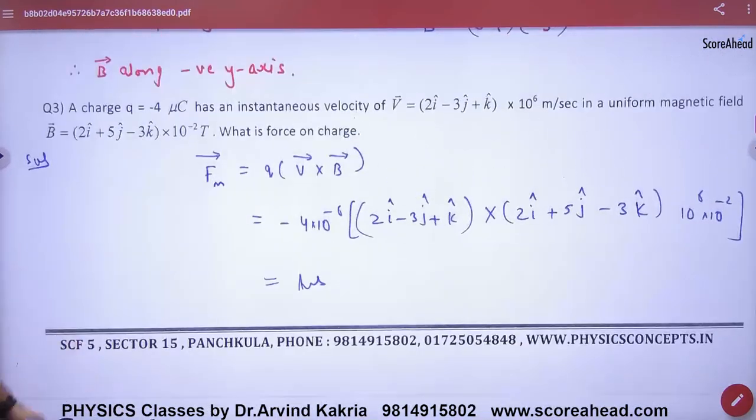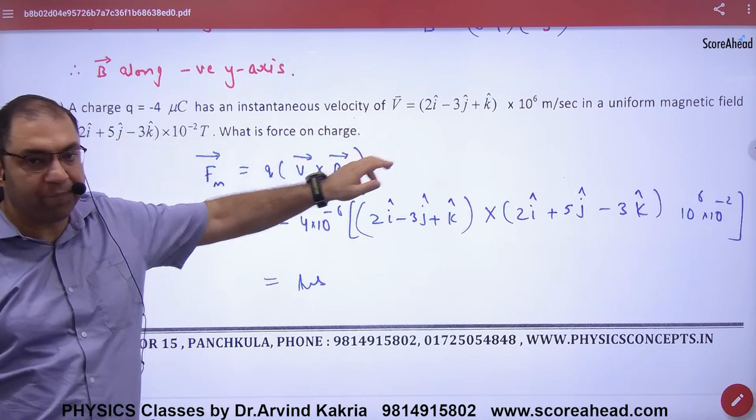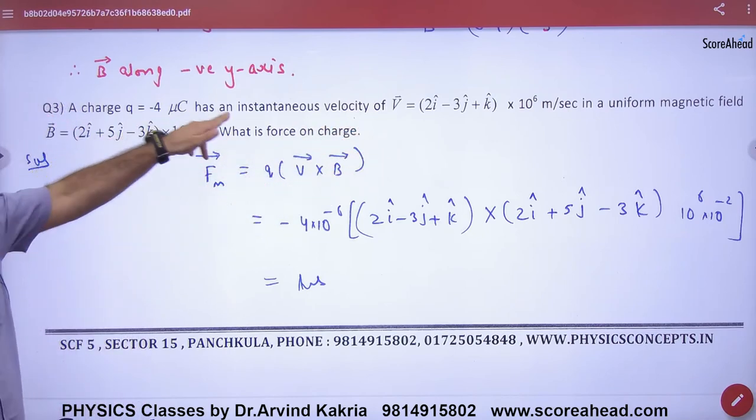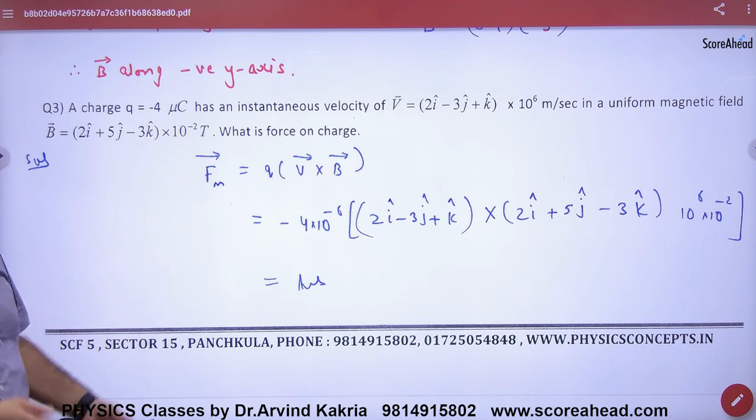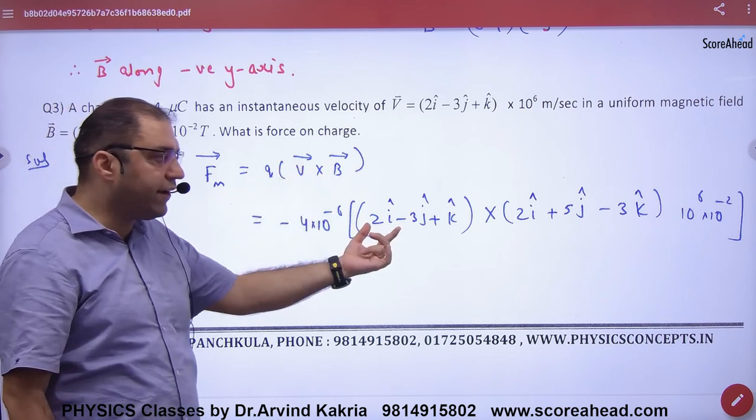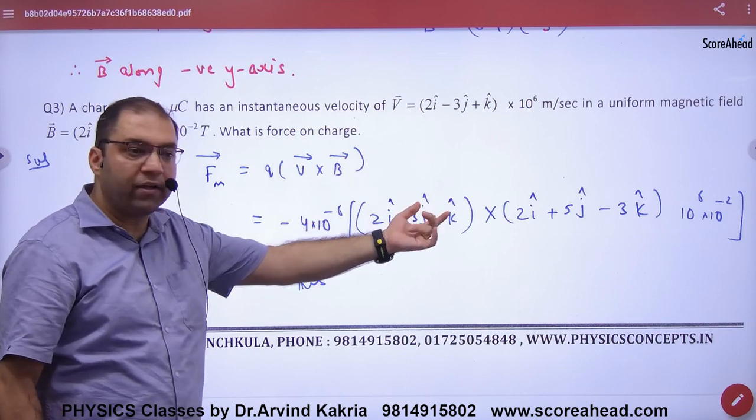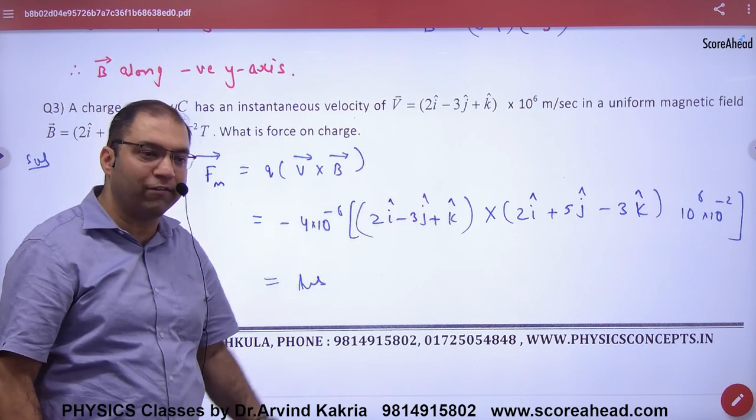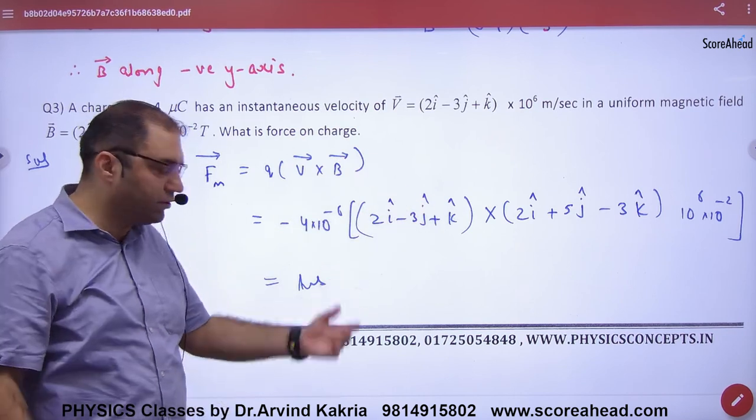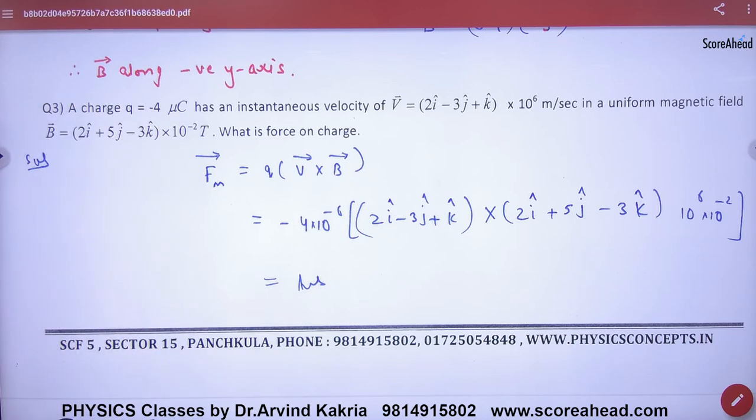Now the question is, if you have a charge is given, the velocity vector is given, the magnetic field is given, if you have force, then the formula is completely clear. Q into V cross B. And V vector is, B vector is. Put cross product plus one, that matrix method. I have not done that.